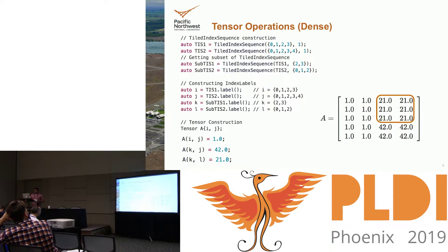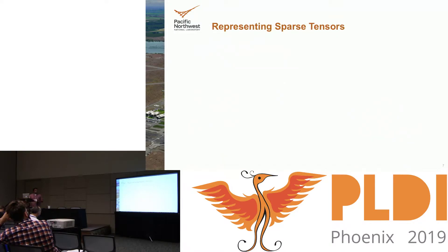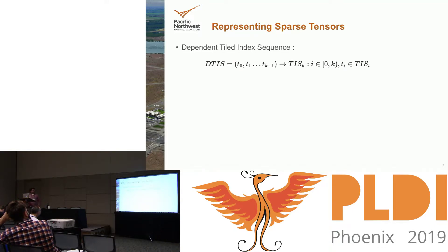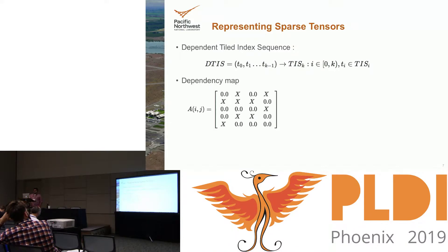Now I'll go into details of the sparse representations. The idea is similar but more challenging to formally explain. A dependent tile index sequence is basically a relation between a set of indices to a subset of a tile index sequence — depending on how many dependencies you have, for each index value you have a corresponding subset of the other sequence.